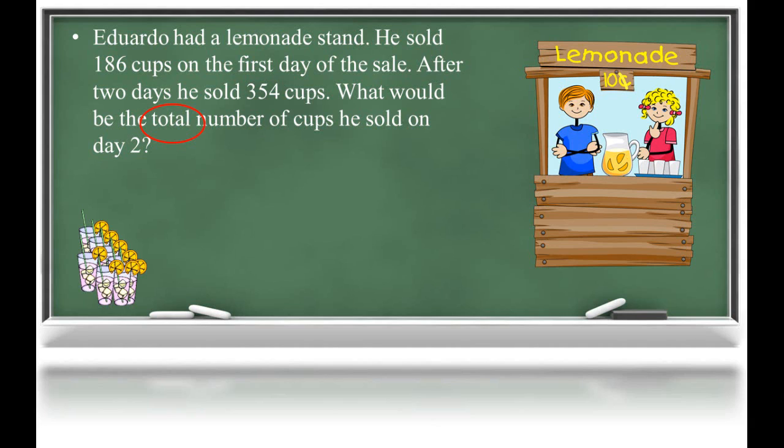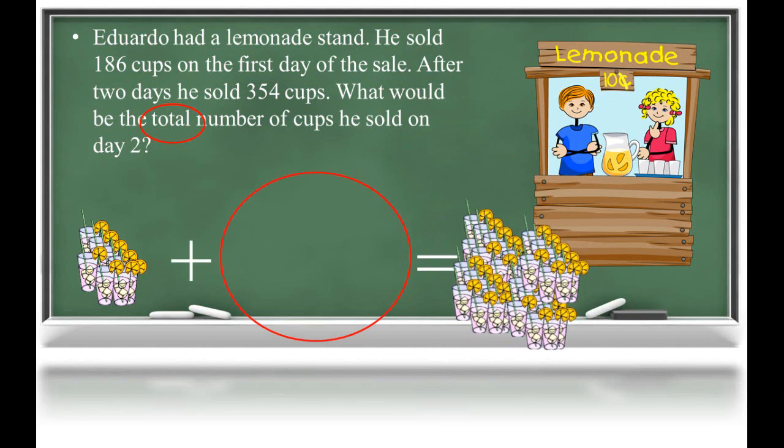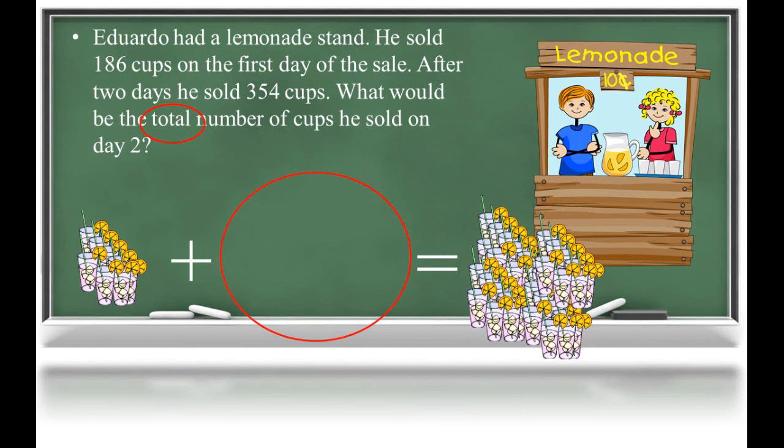What we have them do is look at the action of the problem. We have 186 cups of lemonade sold on the first day. Then we sell some more cups, but we don't know how many. This gives us a total of 354 cups of lemonade. So in fact, for this problem I'm not adding, I have to find that missing addend, which most likely would be solved as a subtraction problem.